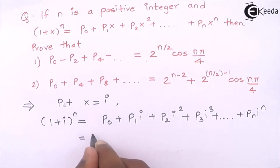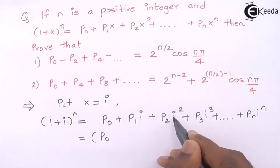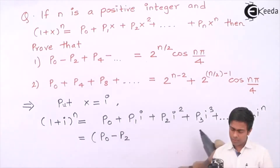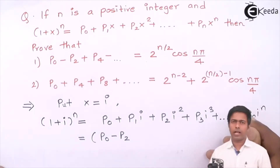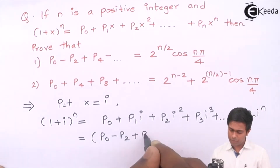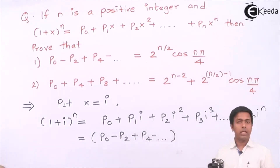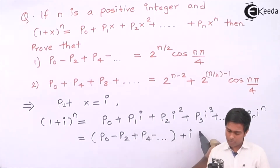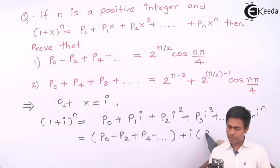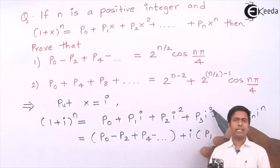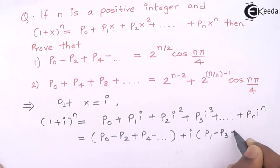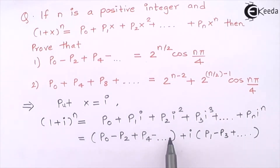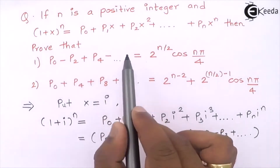Now let's group all real terms together: p0 (since i⁰=1), then i² = -1 gives -p2, then i⁴ = 1 gives +p4, and so on. For imaginary terms: i common, first term is p1; i³ = -i gives -p3, and so on. So we got the real terms exactly equal to the left-hand side of Result 1.